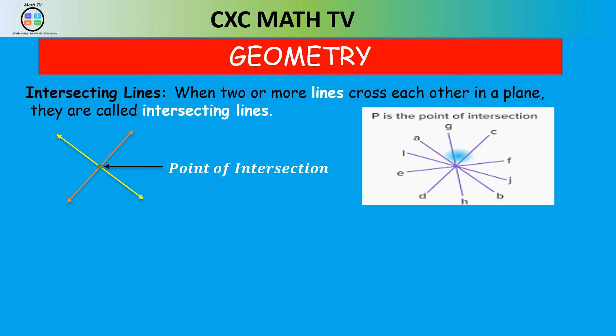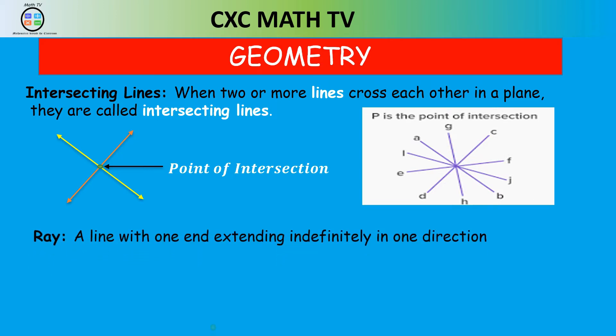The next definition is a ray. A ray is a line with one end fixed, extending infinitely in one direction. You observe that one endpoint is fixed and then it extends in one particular direction.